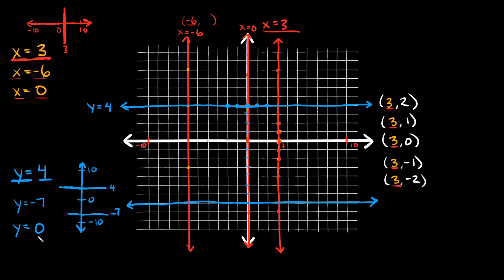This last one: y is equal to 0. Coming back to our number line, where's 0? It's right here in the middle. So on the y-axis, 0 sits exactly on top of the x-axis. So y is equal to 0 would sit exactly on the x-axis right there.